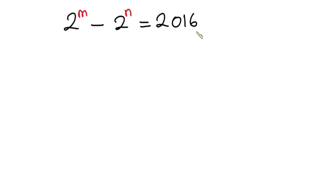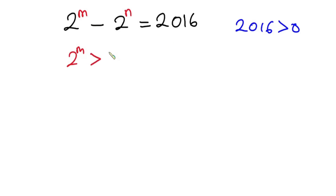So let's analyze the problem. As you can see, we have 2016 over here. This is a positive number, meaning that it is greater than zero. So if 2016 is greater than zero, then considering the left-hand side, this means that 2 to the power m is greater than 2 to the power n. The bases are the same, so it means that m is greater than n.